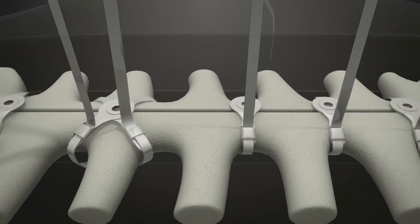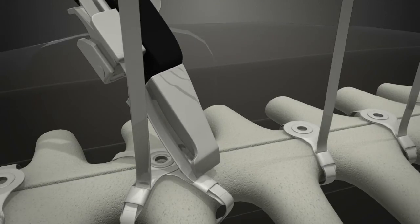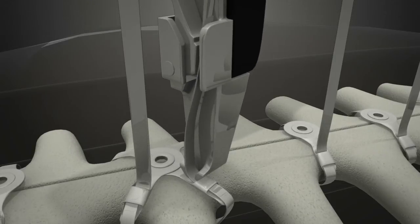Once all straps have been tightened, return to the initial central sternal strap and tighten until fully approximated, then bend to 90 degrees.